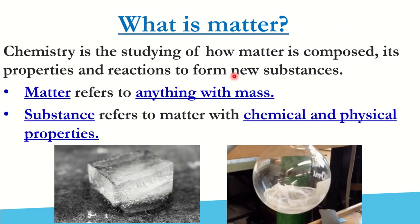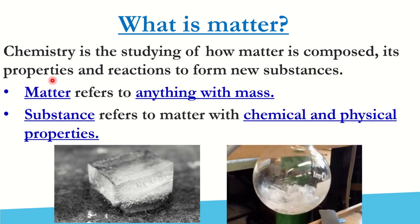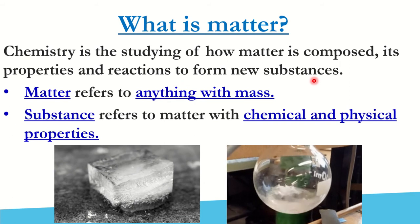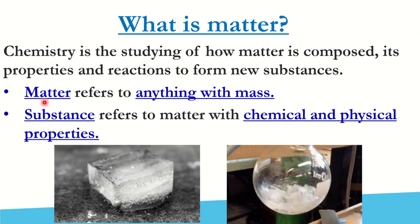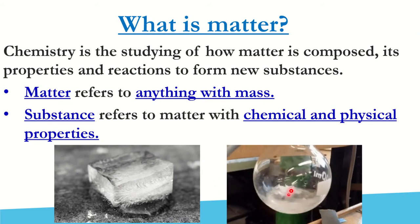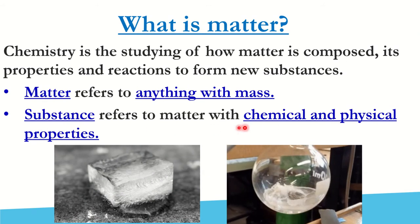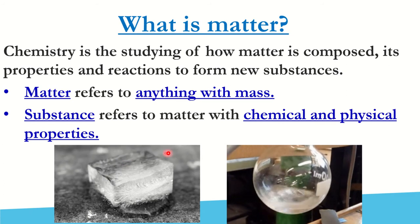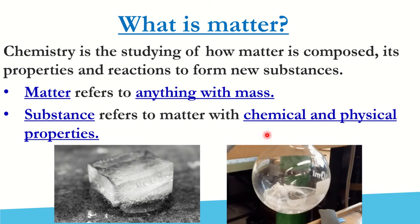We talk about chemistry as the study of how matter is composed, the properties of matter, and how matter reacts with different substances. Just to give a bit of context, matter in the reference of chemistry refers to anything that has mass. It could be an ice block, it could be water in a cup. A substance refers to matter with chemical and physical properties. So it has the ability to conduct electricity, it could be brittle. Those are the type of examples we can use.